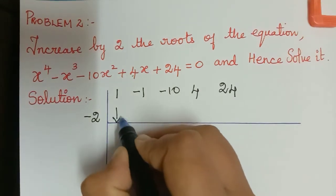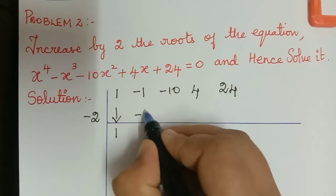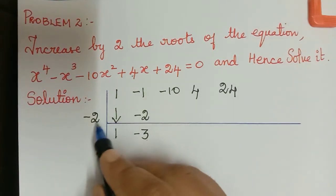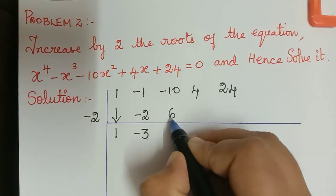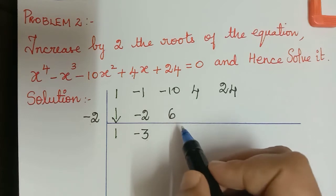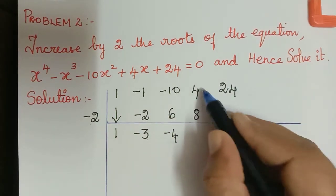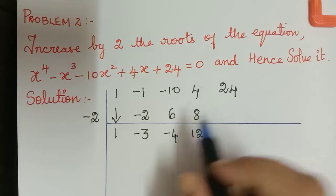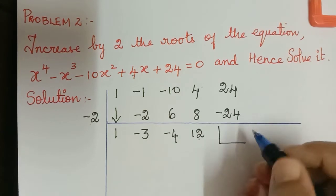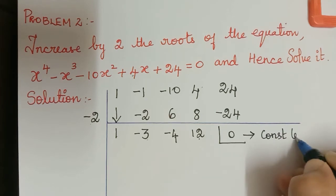This 1 comes down. Negative 2 multiplied with 1 is negative 2. Adding these two with a negative sign gives negative 3. Negative 2 multiplied with negative 3 is positive 6. Adding one negative and one positive, we subtract to get negative 4. Multiplying gives 8, and adding gives 12. Then 12 multiplied with negative 2 is negative 24, and the remainder is 0, so there is no constant term.